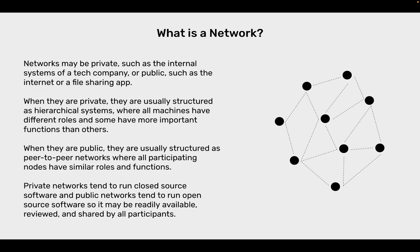Networks may be private, such as the internal systems of a tech company, or public, such as the internet or a file sharing app. When they are private, they are usually structured as hierarchical systems, where all machines have different roles and some have more important functions than others. When they are public, they are usually structured as peer-to-peer networks, where all participating nodes have similar roles and functions. Private networks tend to run closed-source software and public networks tend to run open-source software, so it may be readily available, reviewed, and shared by all participants.